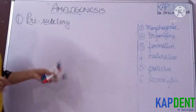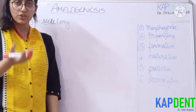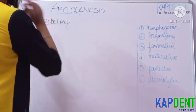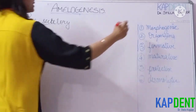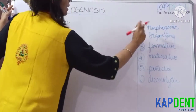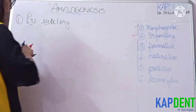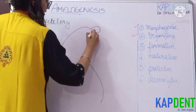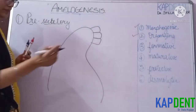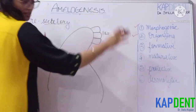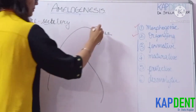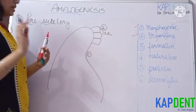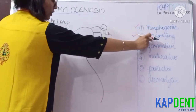In the pre-secretory stage, your inner enamel epithelial cells are getting ready because they ultimately have to deposit and secrete your enamel. This stage corresponds to two stages of the life cycle of ameloblast: your morphogenic and your organizing stage. In the morphogenic stage, the morphology of your final crown is established, and the inner enamel epithelial cells are low columnar in shape.